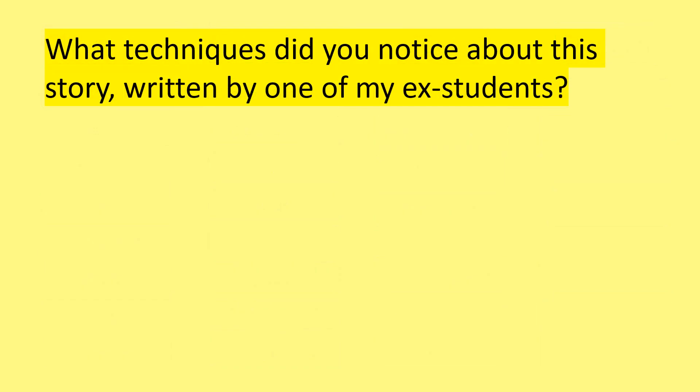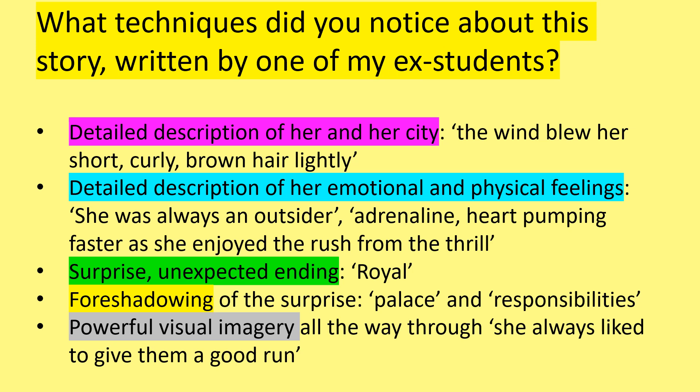What techniques did you notice about this story written by one of my ex-students? I wonder if you noticed any of the following features. There's a detailed description of her and her city — 'the wind blew her short, curly brown hair lightly.' There's detailed description of her emotional and physical feelings — 'she was always an outsider,' 'adrenaline, heart pumping faster, she enjoyed the rush from the thrill.' There's a surprise unexpected ending — she's royal. There's foreshadowing of the surprise with the words 'palace' and also 'responsibilities.' And there's powerful visual imagery all the way through — 'she always liked to give them a good run.'